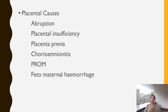The placental causes include premature separation of the placenta, placental insufficiency — that is, if the placenta is not supplying adequate oxygen, nutrients, and vitamins to the baby — placenta previa, where the placenta is located in the lower uterine segment, chorioamnionitis (infection of the chorion, amnion, and fetal membranes), premature rupture of the membranes, and fetomaternal hemorrhage, that is bleeding from the baby to the mother.